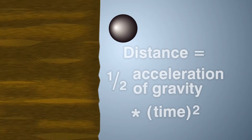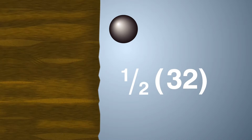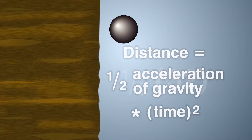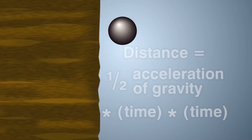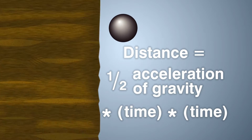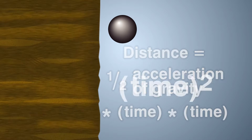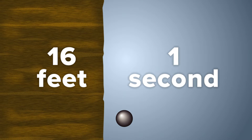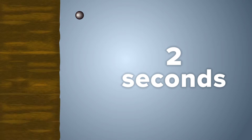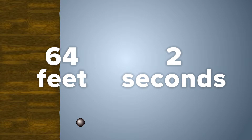Distance equals one-half multiplied by the acceleration of gravity and then multiplied by time squared. When something is squared, it means that you multiply it by itself. In this case, time squared is equal to time multiplied by time. Since the time variable is squared, in one second the distance an object falls is 16 feet, and in two seconds the distance an object falls is 64 feet.